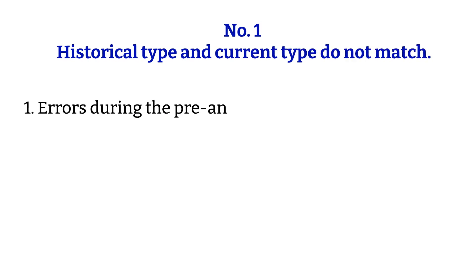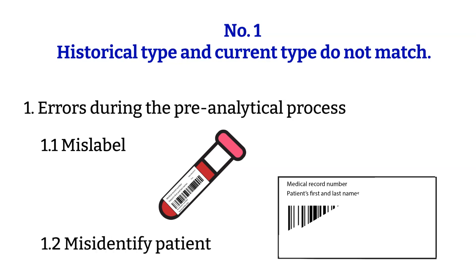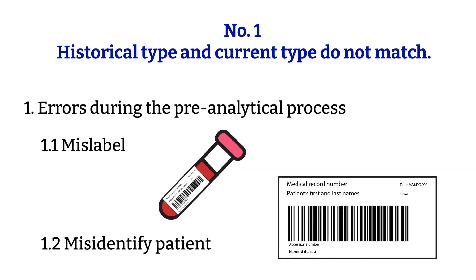Error during the specimen collection process, such as mislabeling and mistaken patient identification, are both errors in the pre-analytical process. Don't overlook or underestimate the importance of the pre-analytical phase. If it is wrong from the beginning, everything else that follows would be wrong by default. Maybe I'll talk about the delta check that laboratories use to help minimize things from falling through the cracks in another video.